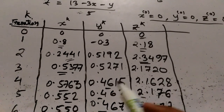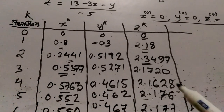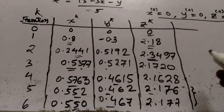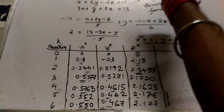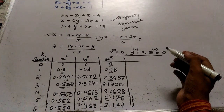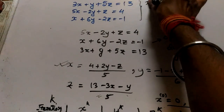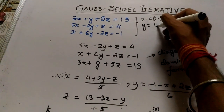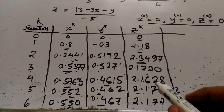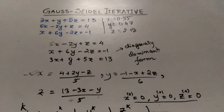If you look carefully, up to the second decimal place the last two values for x, y, and z are the same — so I stop the iterations here. Therefore, x = 0.55, y = 0.47, and z = 2.18. Since the z values were 2.176 and 2.177, I have rounded up to 2.18. This is my solution to the problem.